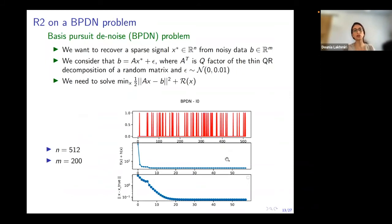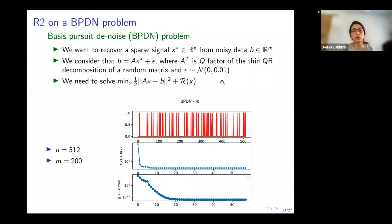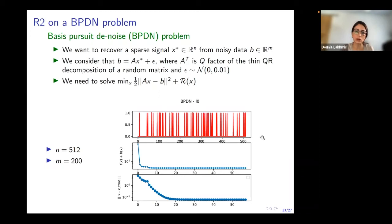Here is an example of running R2 on a basis pursuit denoising problem, where the goal is to retrieve a sparse signal from noisy observations by minimizing a mean squared error term plus regularization. Running R2 with n equal to 512 and m equal to 200, we observe fast convergence in less than 60 iterations. At the end, we retrieve a sparse signal that almost exactly coincides with the true signal — the two curves are identical, so the blue curve lies entirely behind the red one.